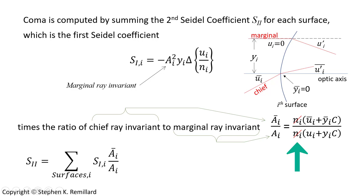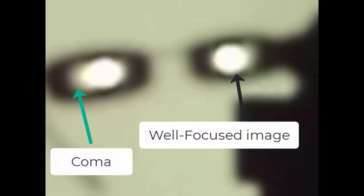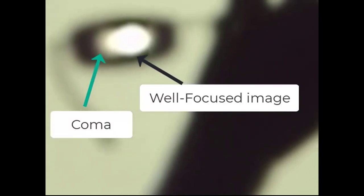The ratio of the chief ray invariant to the marginal ray invariant converts the spherical aberration quantity into a coma quantity. Multiplying this ratio by the first Seidel coefficient S₁ for each surface and summing over all surfaces gives the second Seidel coefficient, which is coma. The comatic wavefront aberration is half of S₂. Both S₂ and W₁₃₁ are measured in length units — if y is in millimeters, W₁₃₁ will be in millimeters. Coma can be observed by holding reading glasses and focusing an image of the sun, then changing the angle of the lens.